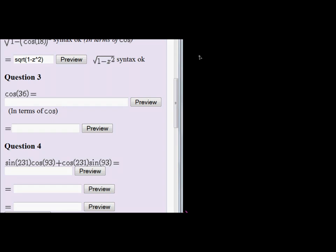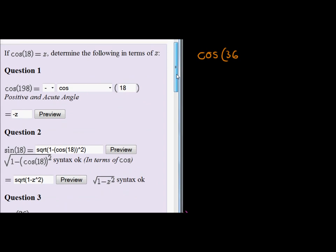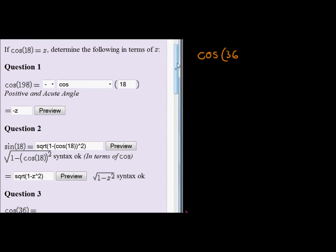Question 3. Cos of 36. So we have cos of 36. Again, we don't know what cos of 36 is, but we do know what cos of 18 is.